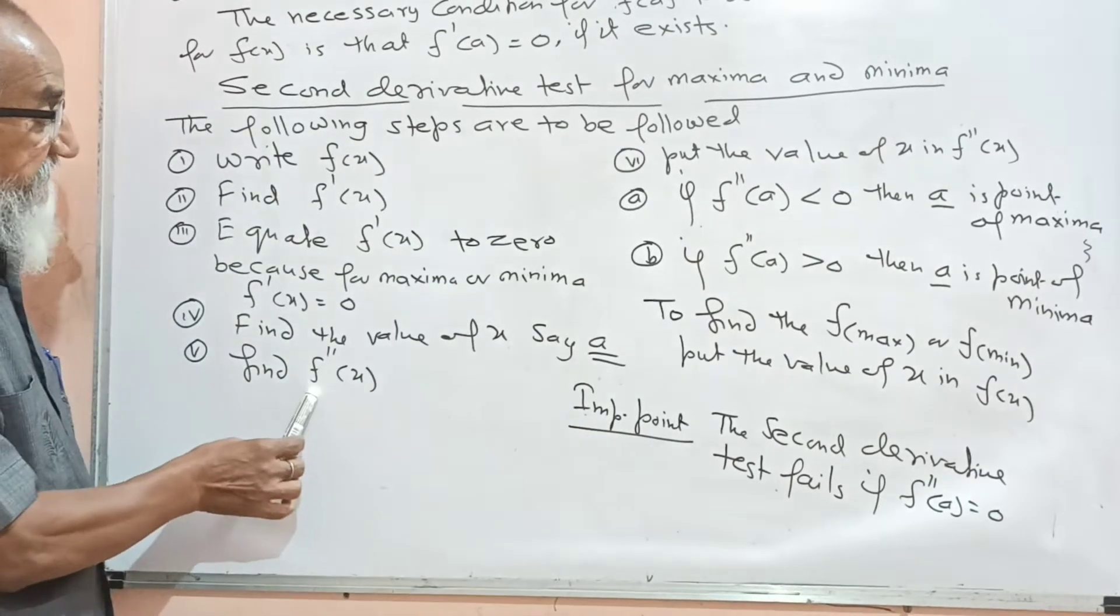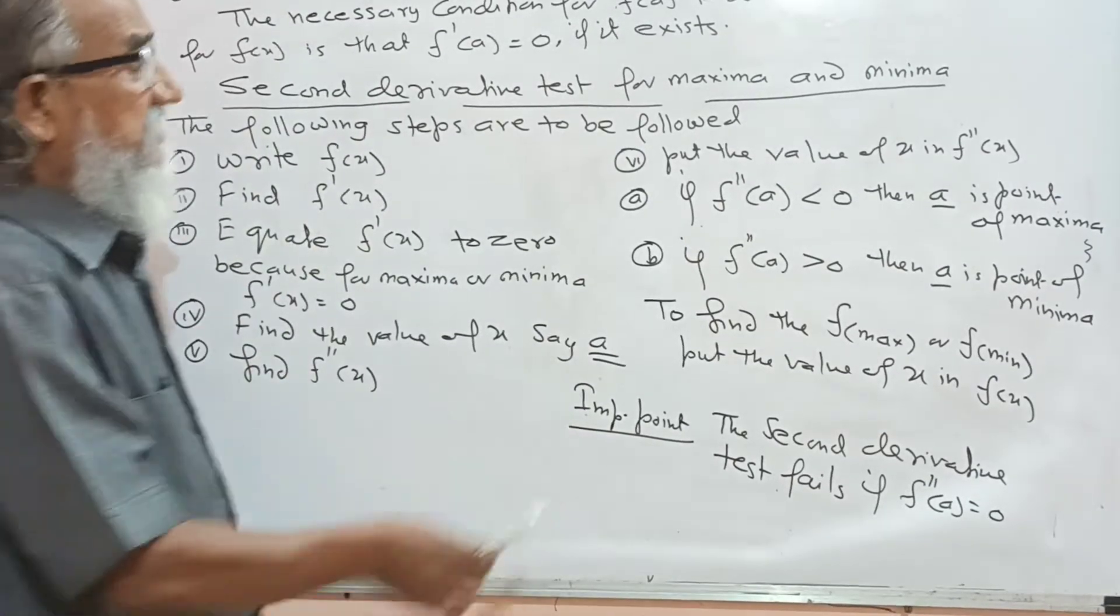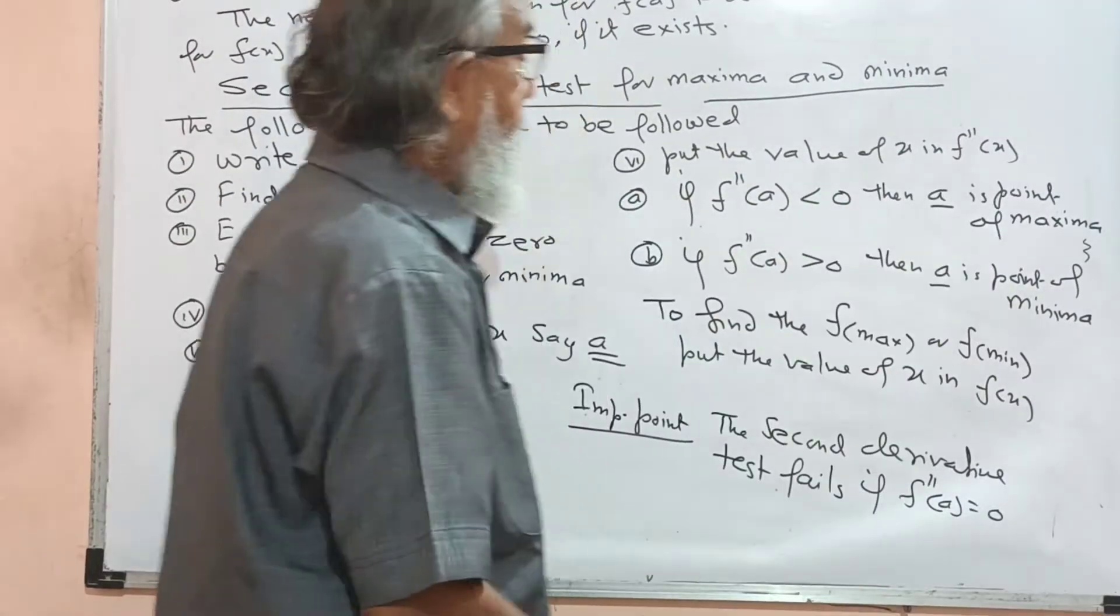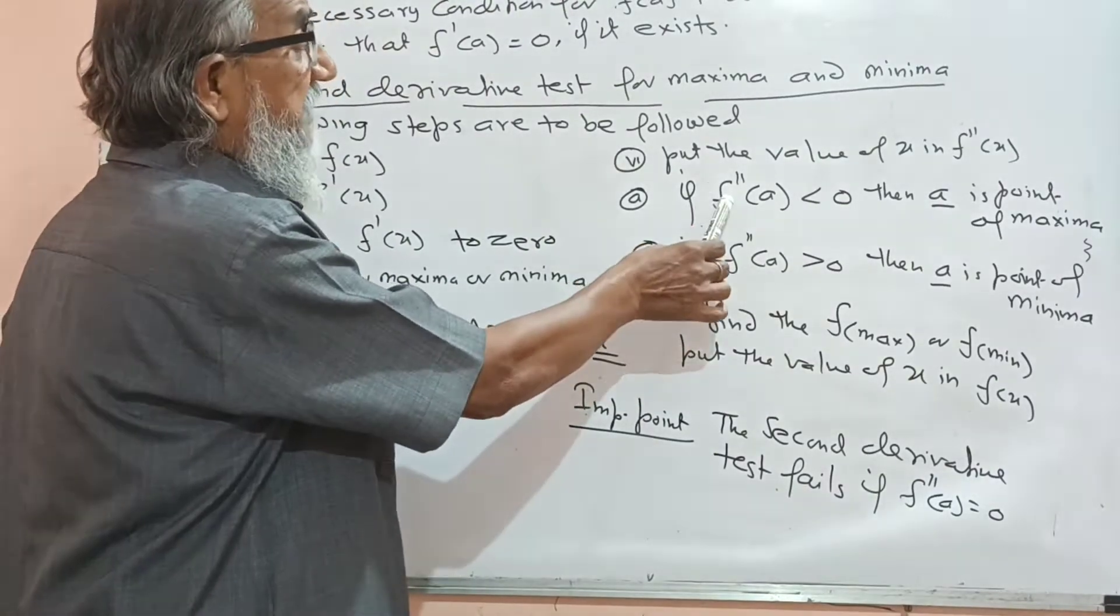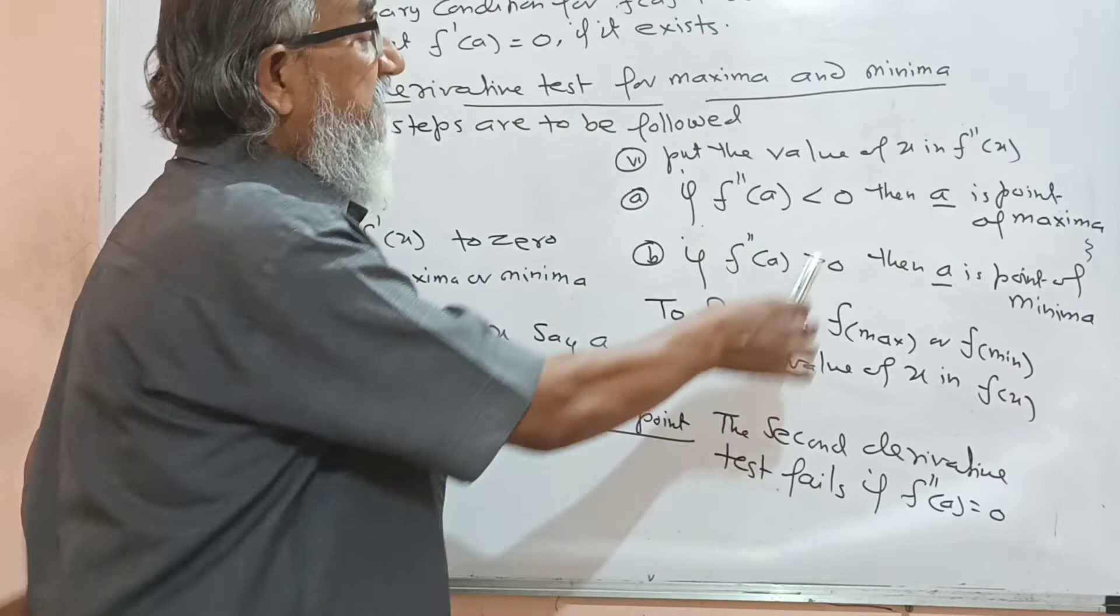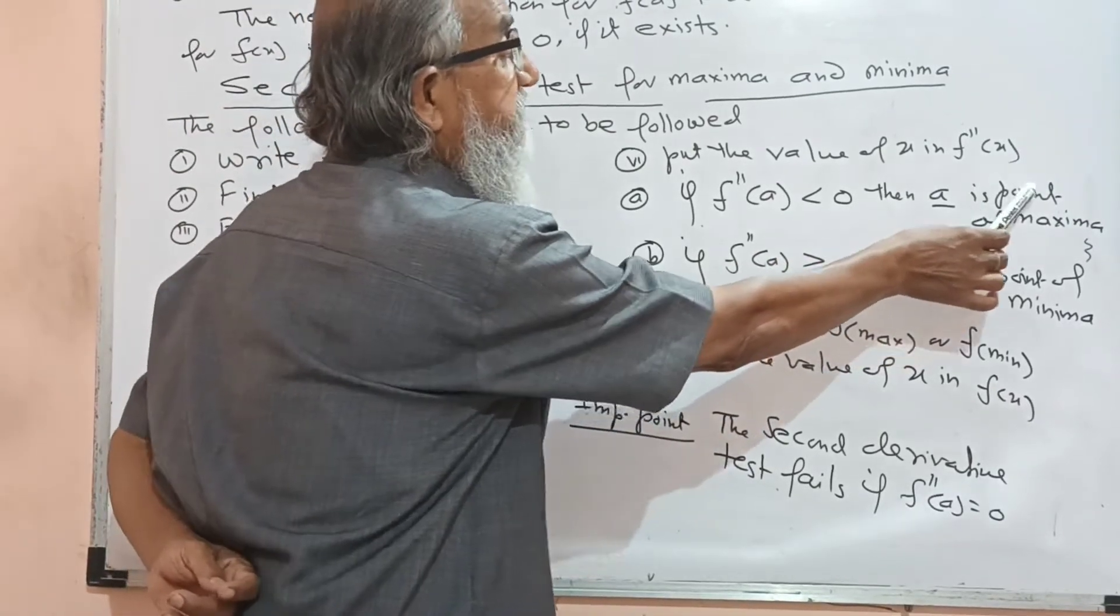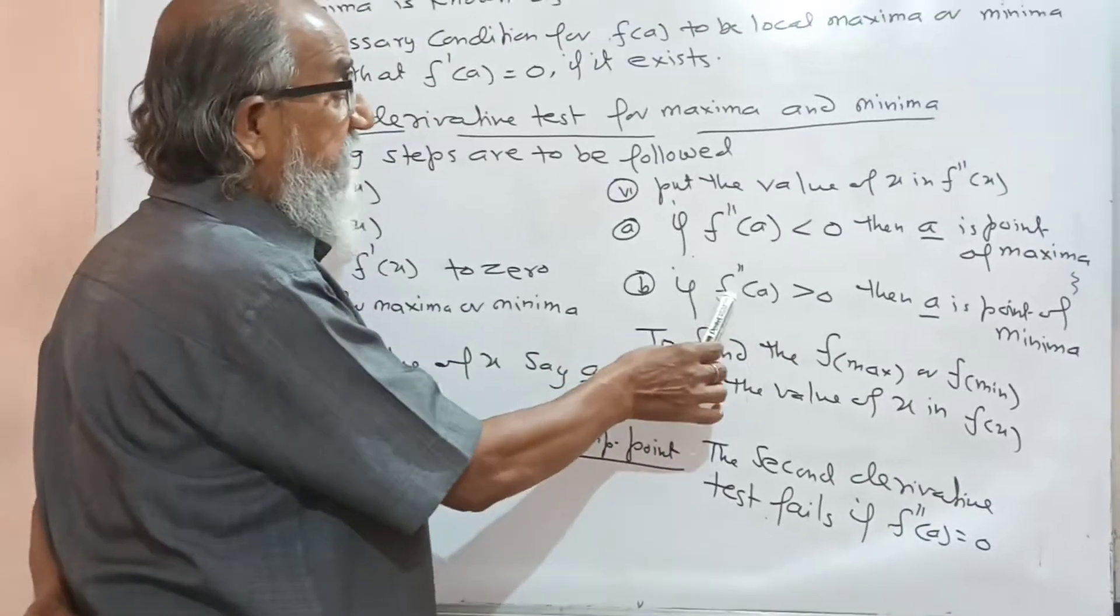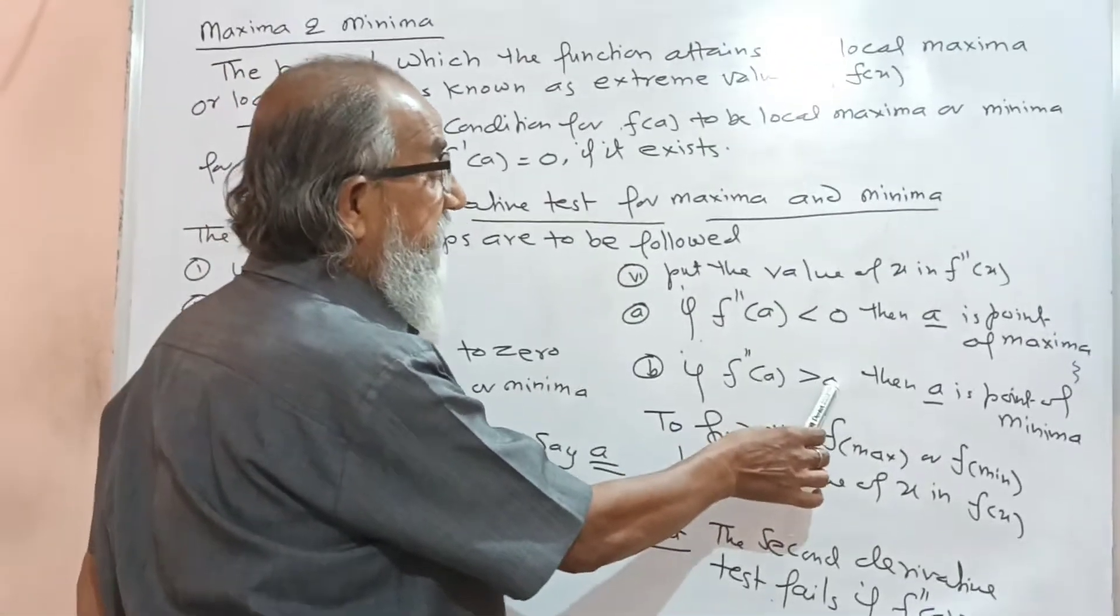Find f''(x). Now put the value of x in f''(x). If f''(a) is less than 0, then a is a point of maxima. If f''(a) is greater than 0, then a is a point of minima.